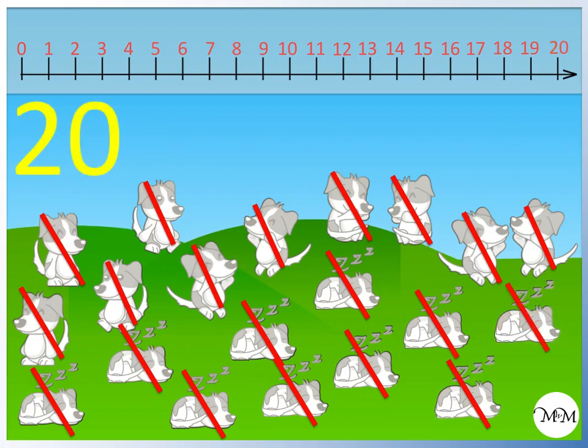Now that we have crossed off all of the dogs, we can stop counting. There are 20 dogs.